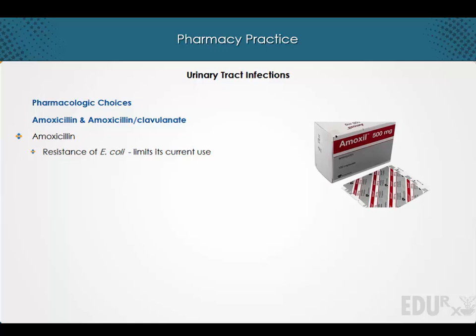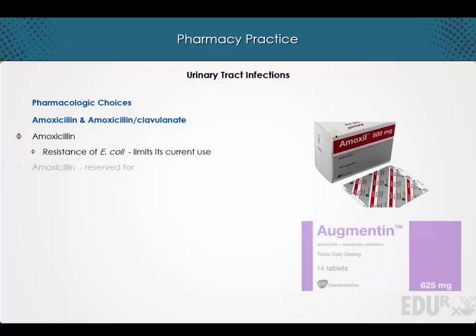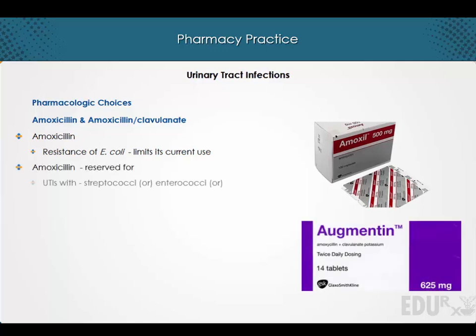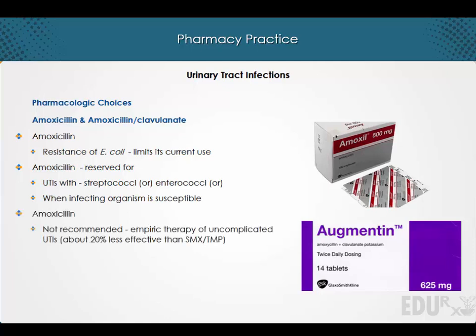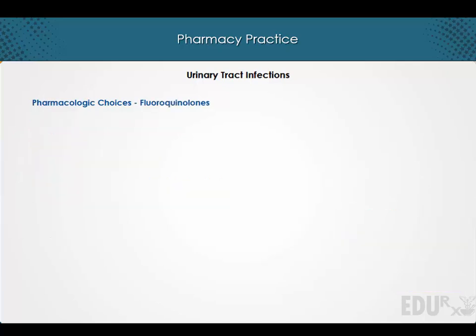Amoxicillin and amoxicillin with clavulanate: resistance of E. coli to amoxicillin limits its current use. Amoxicillin is reserved for urinary tract infections with either streptococci or enterococci when the infecting organism is known to be susceptible. Amoxicillin is not recommended for empiric therapy of uncomplicated urinary tract infections, as it will be about 20% less effective than the combination of trimethoprim with sulfamethoxazole.